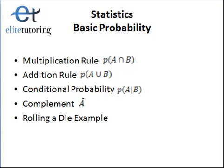Welcome back. This is Part 3 of Basic Probability. We are covering the Multiplication Rule, Addition Rule, Conditional Probability, the Complement of an Event, all using the Rolling of a Die as our example.